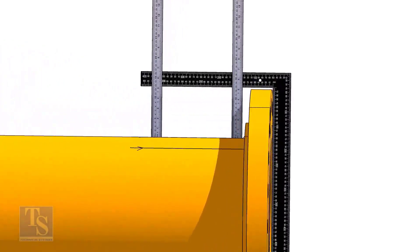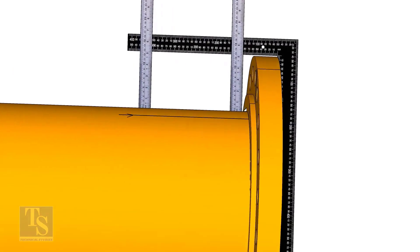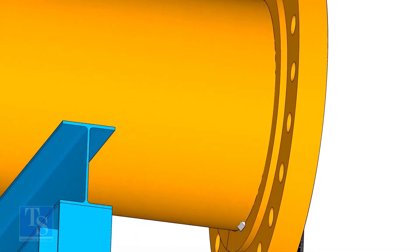Tack weld on the top of the pipe with the flange and check the squareness. If correct, tack weld at the bottom side also.